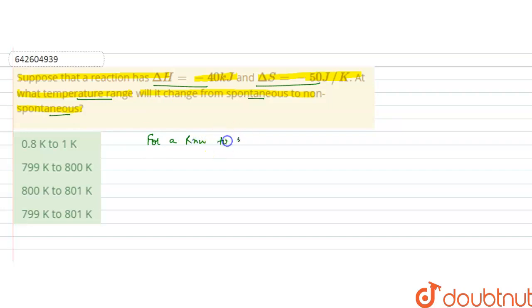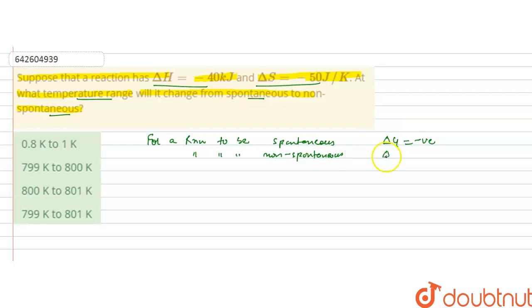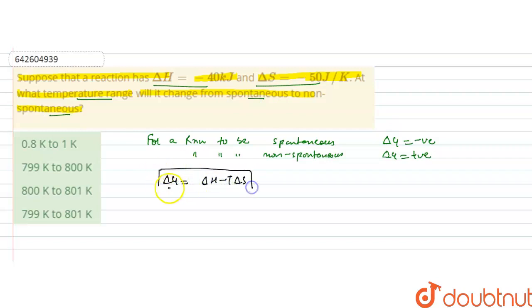For a reaction to be spontaneous, its ΔG must be negative. For a reaction to be non-spontaneous, its ΔG is always positive. We have to find the temperature range where ΔG changes from negative to positive. The relation is ΔG = ΔH - TΔS, which gives us the thermodynamics of a reaction.